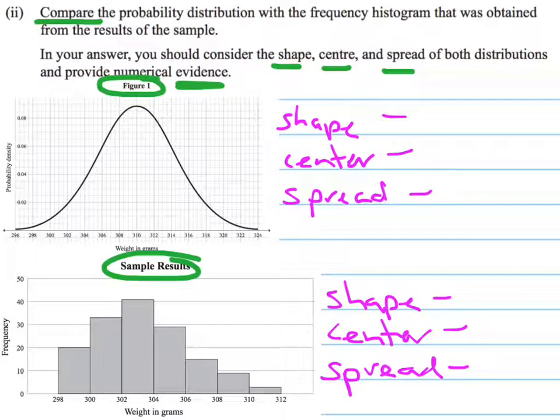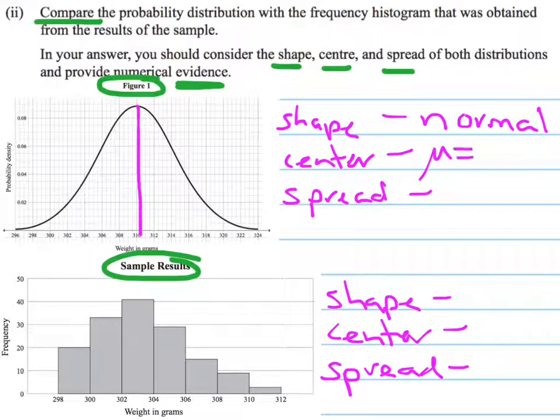So we can look at the first one, figure 1 there, and that looks like a lovely symmetric normal distribution. The centre of that, if we look where the median is, that's got a mean of 310 grams.